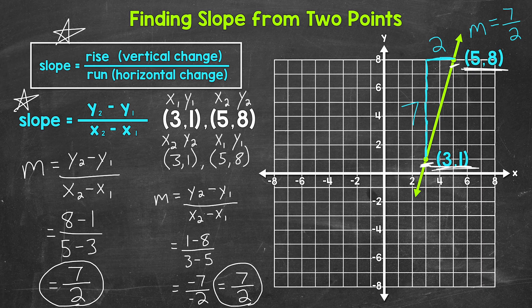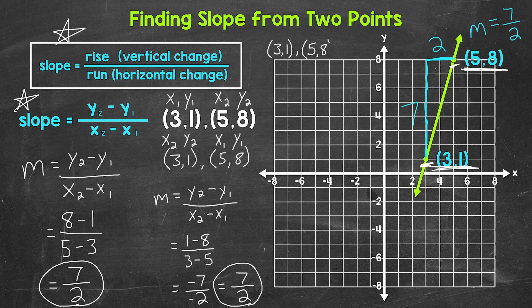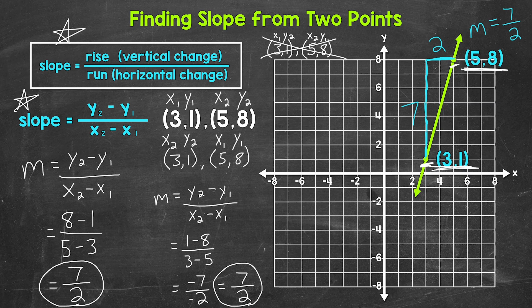Something we can't do is mix and match. For example, let me come up here and find some room. So we'll say this is 3,1 and then 5,8. We can't make 3, x1 and then 1, y2 and then 5, x2 and then 8, y1. So we can't mix and match. That's not going to give us the correct slope. Let's move on to our next examples.